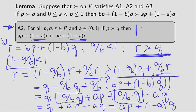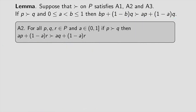So I've proven that r, which is bp + (1−b)q, must be strictly preferred to ap + (1−a)q. This is the proof of this lemma. It boils down to a couple of applications of Axiom A2 followed by some algebra.